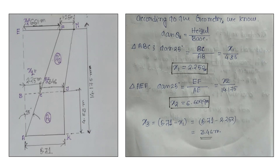Similarly, from triangle AEF, tan(25°) equals height over base, where the height is EF (denoted x2) and the base AE is 14.175 meters, giving x2 equal to 6.6099 meters. For x3, which is CJ, we take BJ (5.70 meters) minus BC (2.25 meters), giving x3 equal to 3.46 meters.